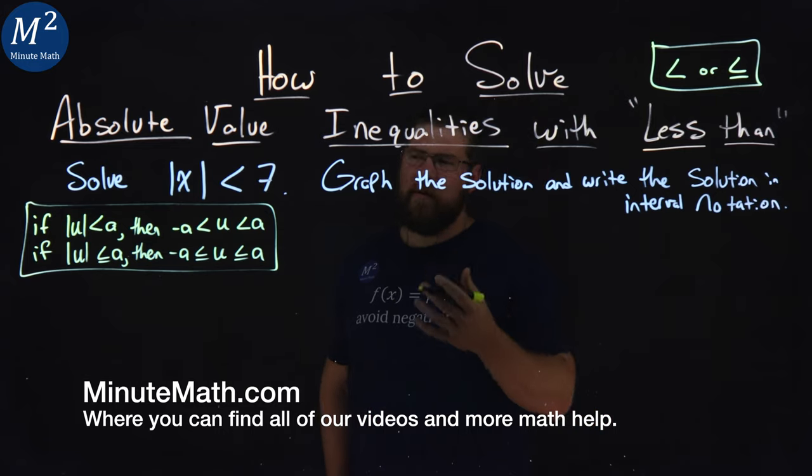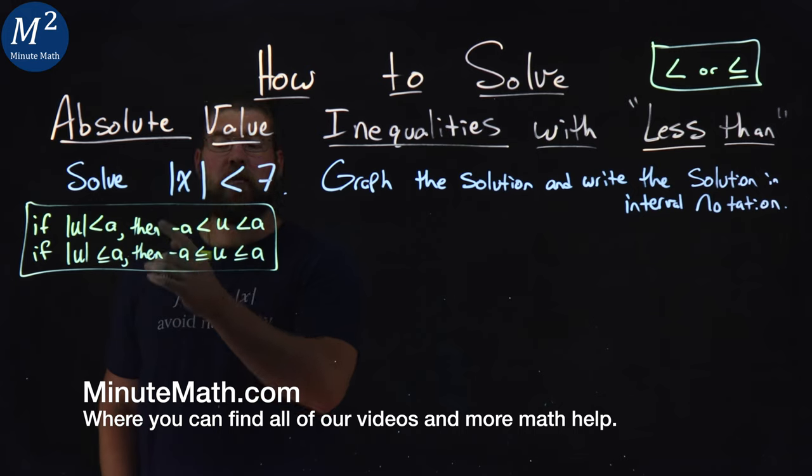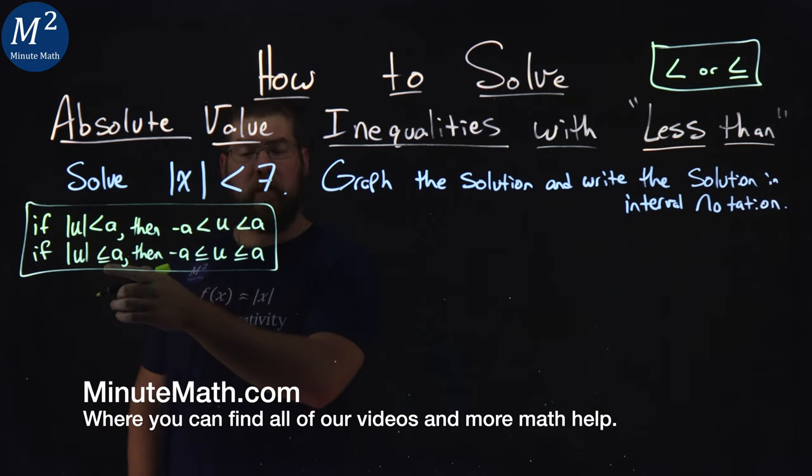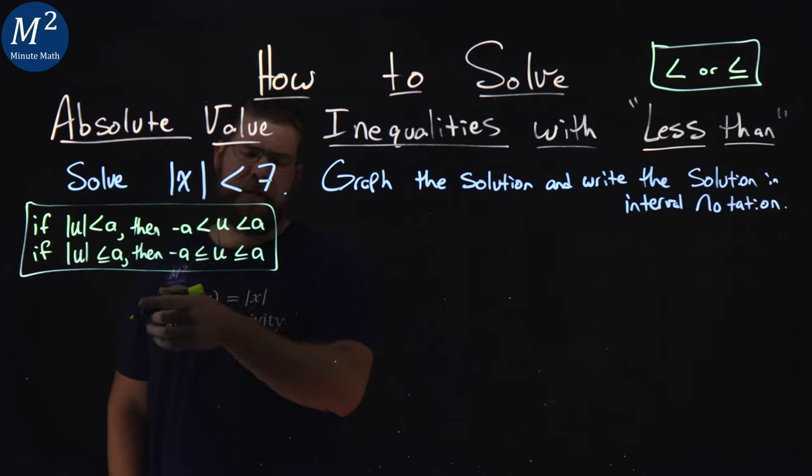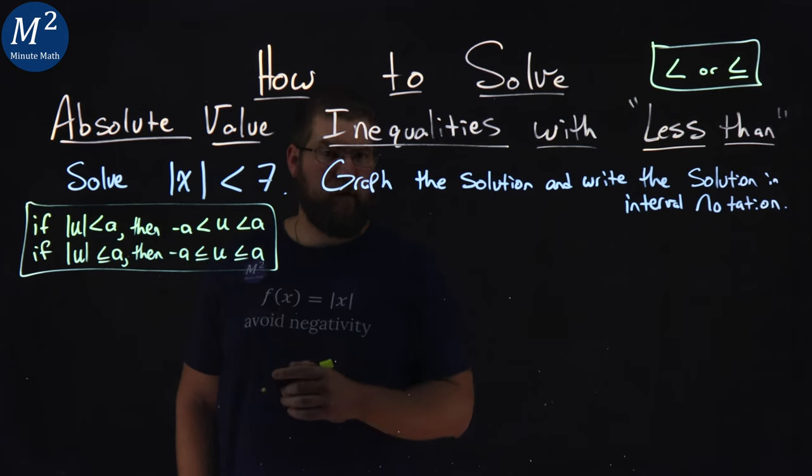To solve absolute value inequalities with less than, we follow these rules. If the absolute value of u is less than a, or less than or equal to a, same basic rule applies. Then, negative a is less than u, or less than or equal to u, and then continue that on as less than positive a, or less than or equal to positive a.